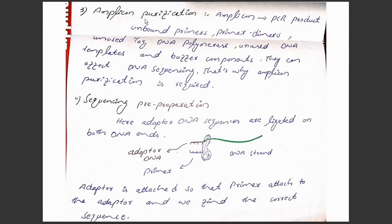The third step is Amplicon purification. Amplicon is the PCR product. We need to purify the Amplicon because there will be unbound primers, primer dimers, unused Taq DNA polymerase enzyme, unused DNA templates, and buffer components. If we do not remove these ingredients, they can affect the DNA sequencing. That is why Amplicon purification is required. Primer dimers means when two primers attach with each other.